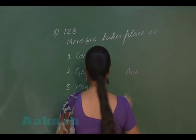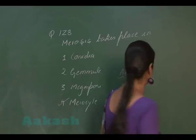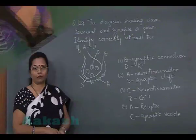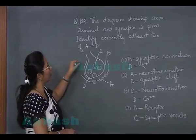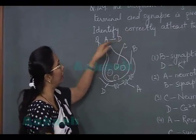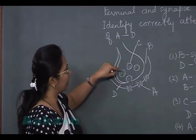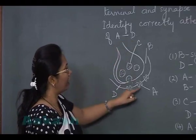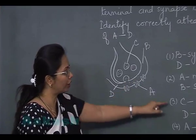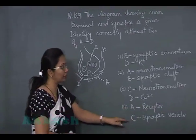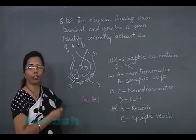The right answer for question 128 is option 4. Now for question 129, this diagram depicts a chemical synapse and we have to identify at least two structures from A to D. We can see that C represents the synaptic vesicles, and A represents the receptors for the neurotransmitter in the post-synaptic membrane. So the answer is option 4: A is the receptor and C is the synaptic vesicle.